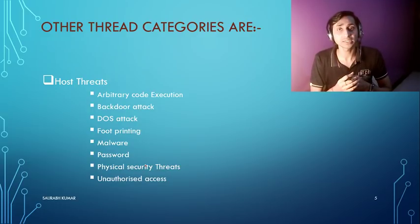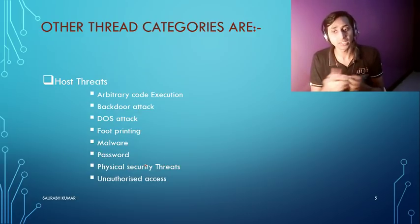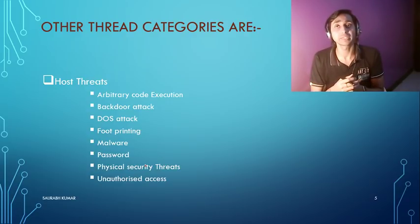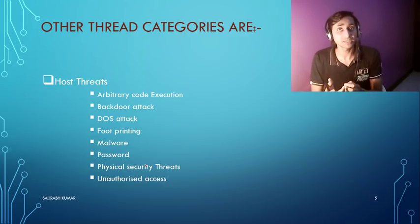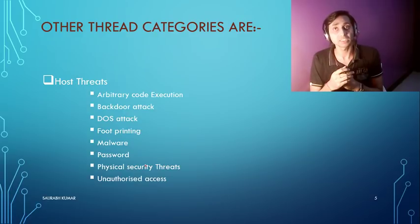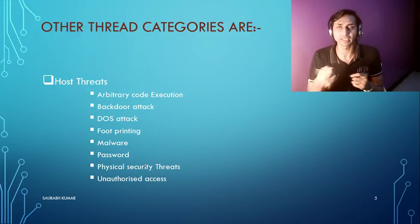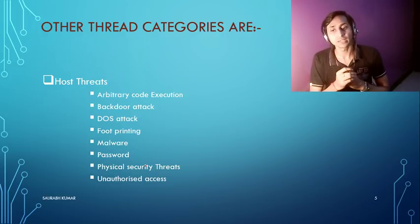When we talk about host-related threats — threats to a computer machine or server — there can be arbitrary code execution, backdoor attacks, DOS attacks, and footprinting attacks. In the next video, we will see how an attacker can easily do footprinting to learn about the victim: what system they have, what operating system, how much RAM, and what processor. There can also be malware attacks, password-related attacks, physical security threats, and unauthorized access.